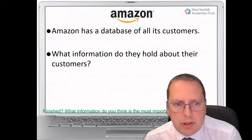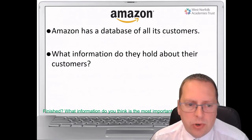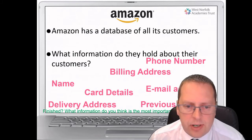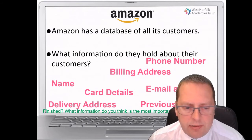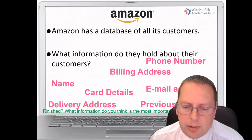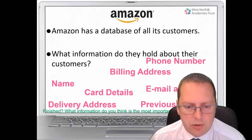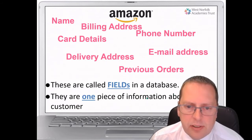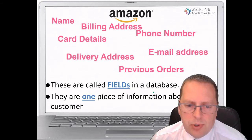If we think of big companies like Amazon, they have a database of all their customers. You need to think about what information they hold on each customer — phone numbers, where to send deliveries, where to send the bills, name, card details, email addresses, and delivery options, as well as things previously ordered. If they know what you've previously ordered, they might be able to make recommendations for future products. Each one of these bits of information is known as a field in a database — a phone number would be a field, an email address would be a different field. It's one piece of information about a customer.